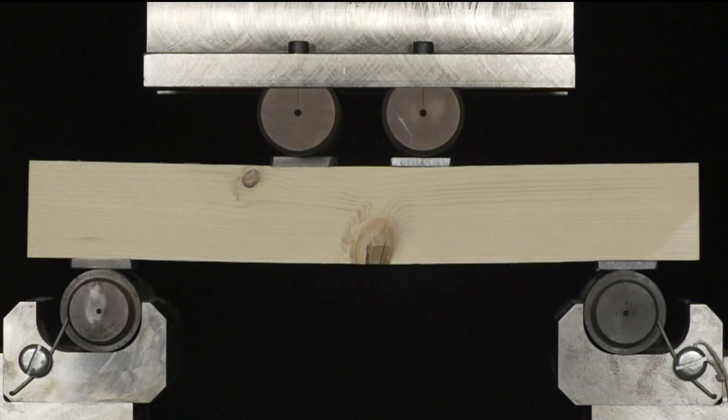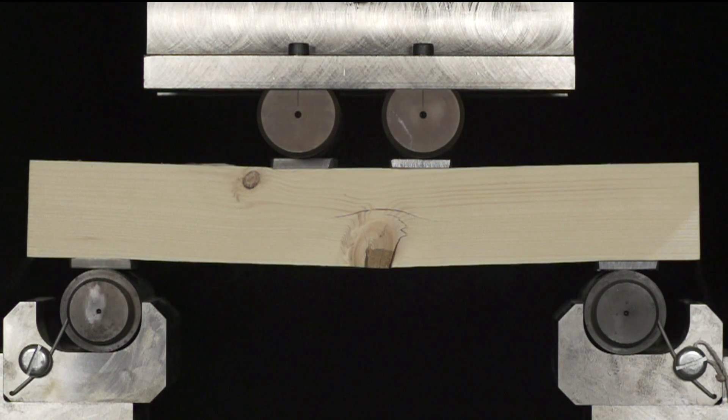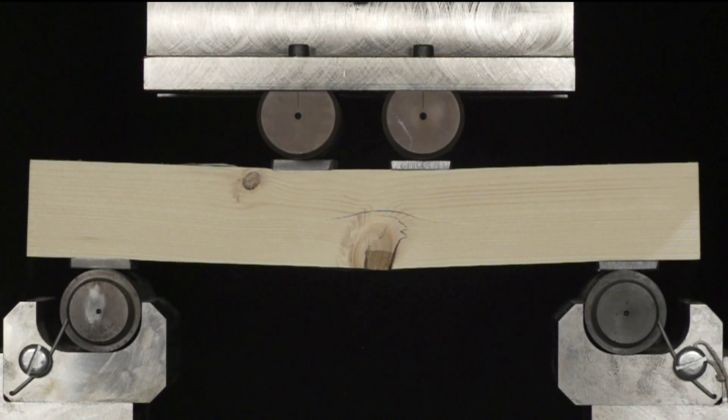As the beam deflects, we see cracks appearing near the knot. Fracture occurs when the extreme stresses in the tensile zone reach the failure stress of the wood.